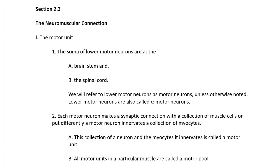Lower motor neurons are also called alpha motor neurons. There are also upper motor neurons, which are in your motor cortex in your brain, and those are the ones that guide voluntary actions of your muscles. Upper motor neurons synapse with the lower motor neurons, which are also called alpha motor neurons. Since we are only interested in lower motor neurons, we will simply refer to them as motor neurons.